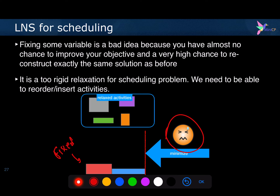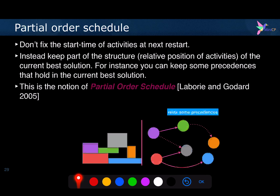The reason is that this is a too rigid relaxation. It's not a good idea to fix the starting times of the activities. Instead of that, what we prefer to do in scheduling is fix a partial order schedule. A partial order schedule means we will impose some precedences over the activities — so instead of fixing the starting time, we will post some precedences that exist in the current best solution.